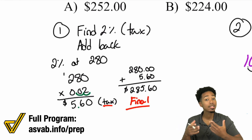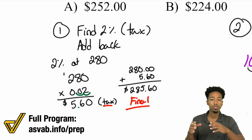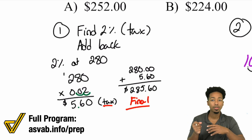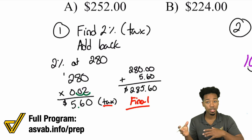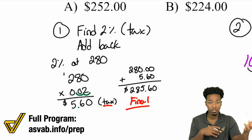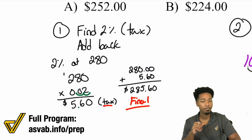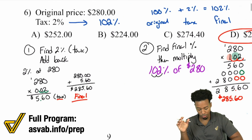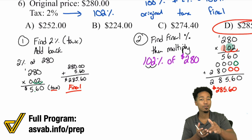Both methods work exactly the same. Method two is cleaner with less to do, but both get you to the right answer. Whether you start from 100% and find the final percentage in one step, or find the tax percentage separately and add it back — both approaches work absolutely fine.